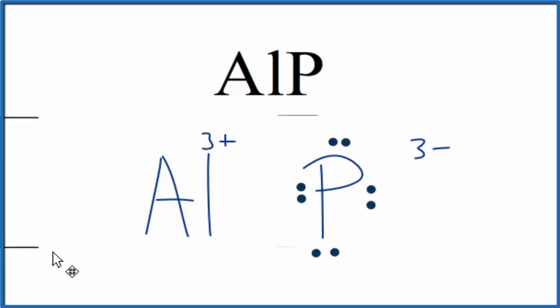We should put a bracket around the phosphorus here to show that the phosphorus, it now has those electrons. And sometimes you'll see brackets around the aluminum as well. The key point is though, that the aluminum transferred the electrons to the phosphorus, and now these electrons are with the phosphorus.